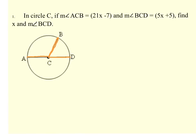Well, what we have to recognize here is that we are looking at the diameter AD, which is cutting the circle in half. That means that the measure of angles ACB and BCD, if you add those together, should equal 180 degrees. So we're going to take 21x minus 7, add that to 5x plus 5, and set that equal to 180.